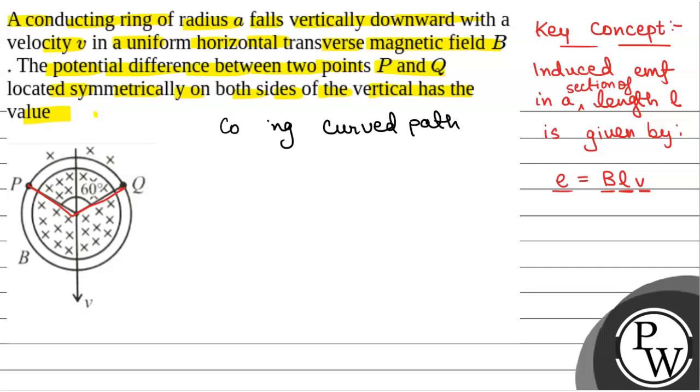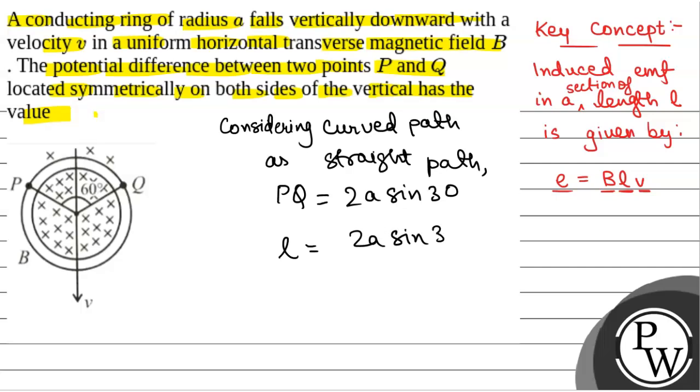Considering the curved path as a straight path, we will have the length of this curved path PQ will be equal to 2A sin 30. We will have L is equal to 2A sin 30, and sin 30 is 1 by 2, so that will be 2A into 1 by 2, that is A.